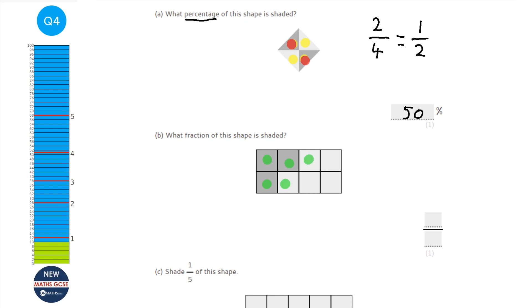The next question: what fraction of the shape is shaded? Count the equal chunks — there are eight. So the denominator is 8. Count the shaded ones: three are shaded. So the fraction is 3 over 8, which I can't simplify further. Answer: 3 over 8.